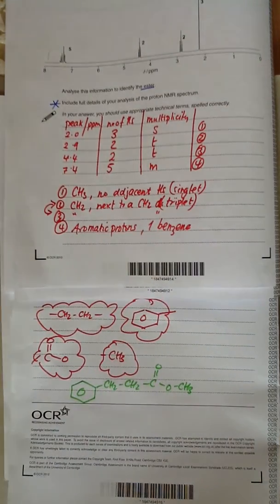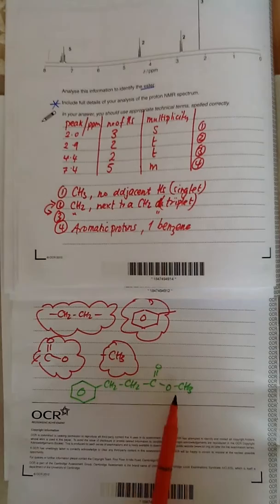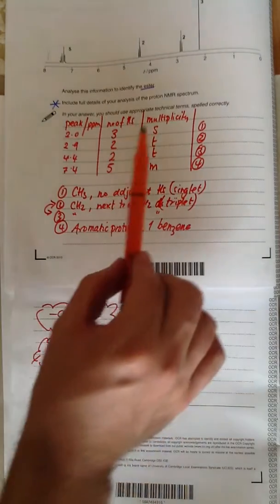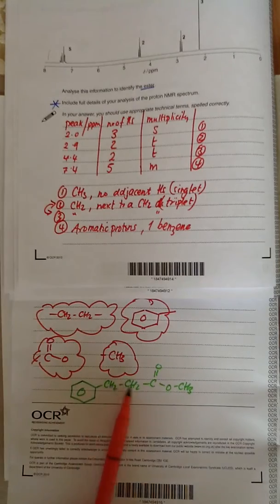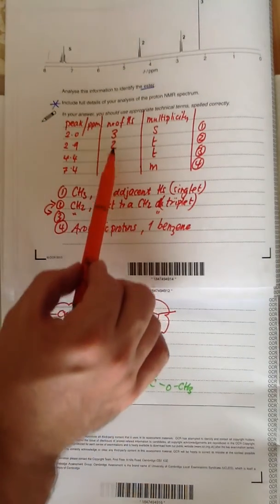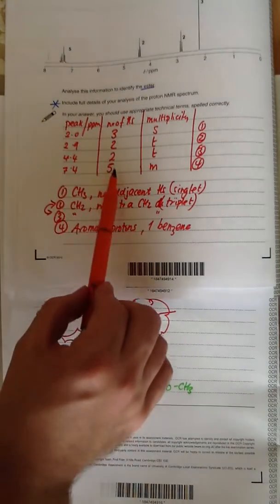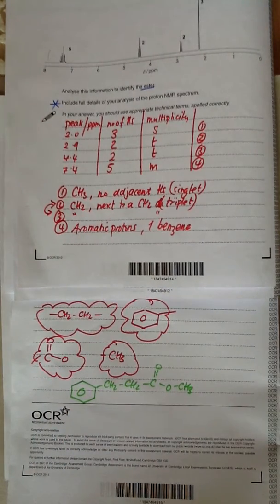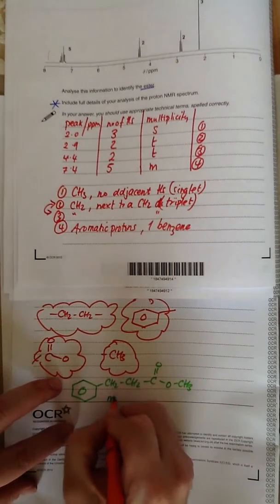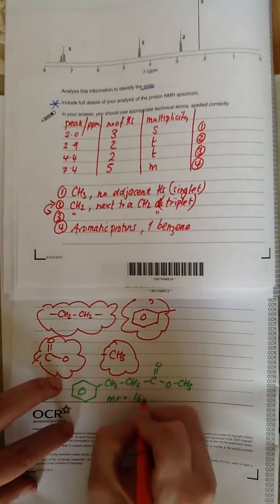So that's an ester. And it also means that CH3 has got no adjacent hydrogens. We know that because there's no adjacent hydrogens there. We know there's two CH2s next to each other. There's two CH2s next to each other. And there's a benzene ring. And there's a benzene ring. If you add all that up, the molecular mass you go up to is 164.